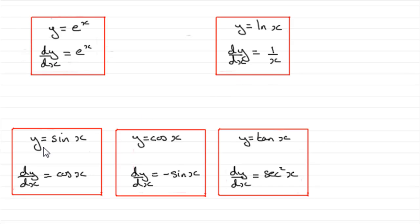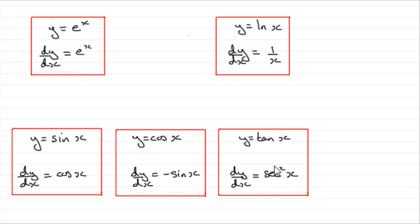And for trigonometric functions — y equals sin x, y equals cos x, y equals tan x — it can be shown that dy/dx for sin x is cos x, and dy/dx equals minus sin x when you've got y equals cos x. And if y equals tan x, dy/dx is sec squared x.